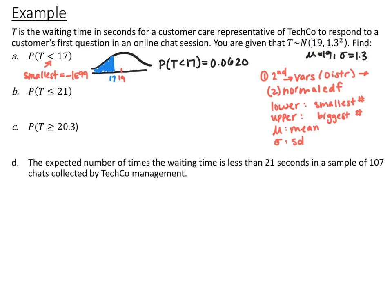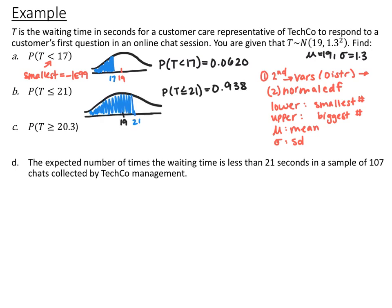Pause the video and try the same thing for T less than or equal to 21. I drew my picture with the mean at 19, and since 21 is bigger than 19 it goes on the right, but I still shade to the left. Using the graphing calculator with the smallest number as negative 1E99, I end up with a probability of 0.938.